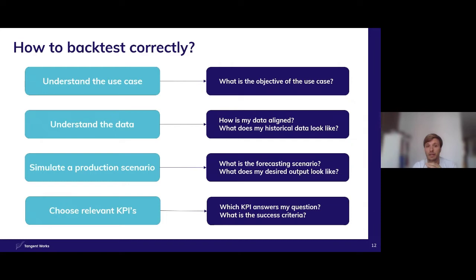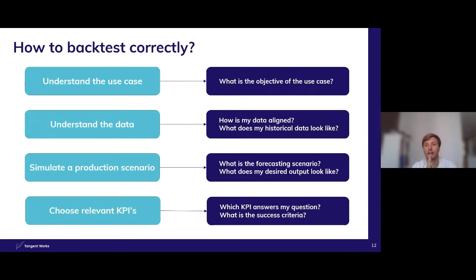The second important topic is understanding the data well. Before doing any backtesting, it's always very useful to explore the data in detail — take a closer look at what patterns there might be that you want to automatically extract. It's also important to understand how the data is aligned, because you don't want data leakage. You need to make sure you provide the model the data it has at the moment of execution, and not too much information which will skew the results. Also take a look at historical data for any structural changes, gaps, or data that might be irrelevant or unavailable now.